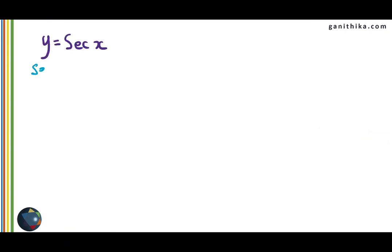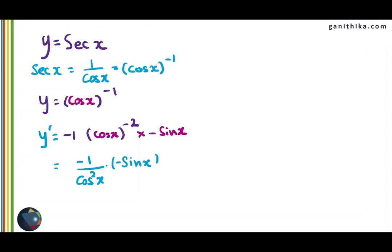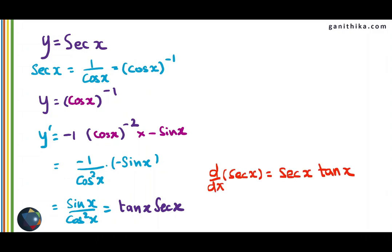Some special functions are differentiated using chain rule. Secant x can be written as 1 over cos x, which is cos x to the power of minus 1. Don't confuse this with cos inverse x — this is cos x to the power of minus 1. Using the chain rule, the power minus 1 function is the outer function and cos is the inner function. Power minus 1 becomes minus 1 times cos to the power of minus 2 using the power rule, multiplied by the derivative of cos x which is minus sin x. This gives minus 1 over cos squared x times minus sin x, which equals sin x over cos squared x. Simplifying, this is tan x times sec x. Therefore, the derivative of secant x is secant x tan x.